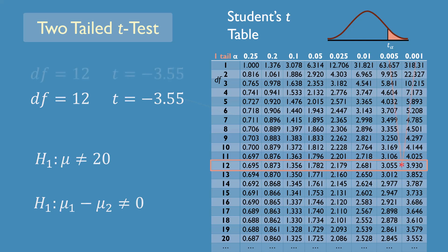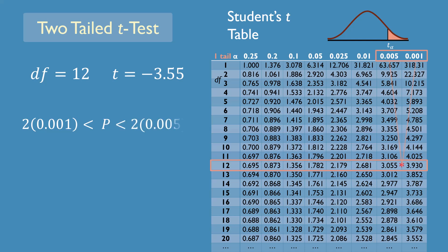That is, the p-value will be between 2 times 0.001 and 2 times 0.005. So the p-value will be between 0.002 and 0.01. Or we can simply say that the p-value is less than 0.01.